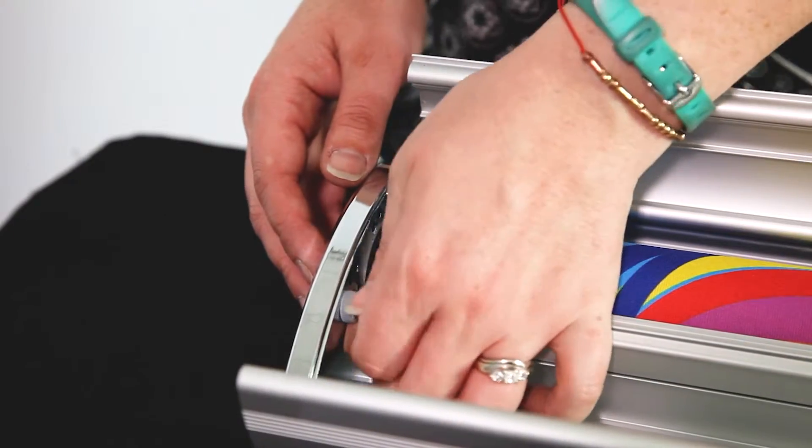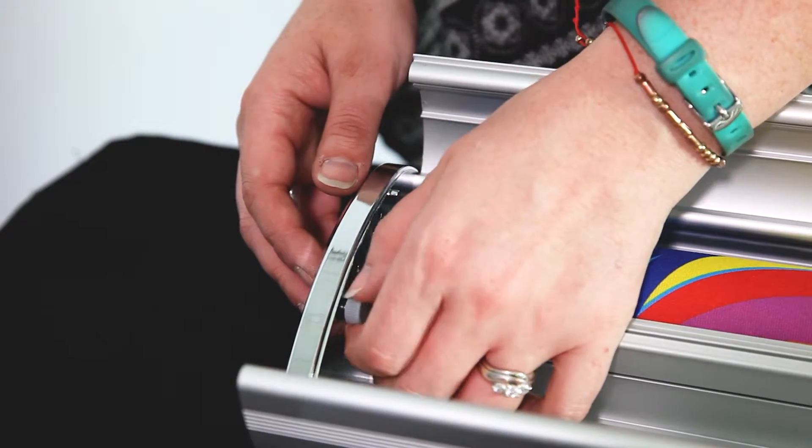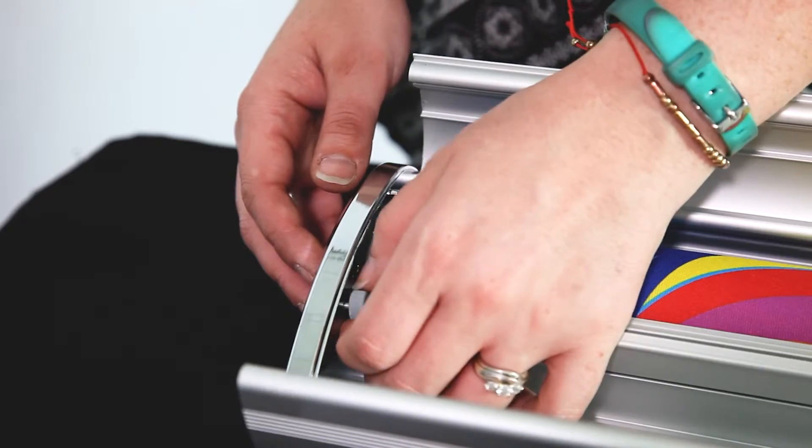Next locate the gray knob on the roll-up's left side as shown here and twist it counterclockwise. Remove the screw and set it aside.